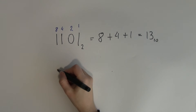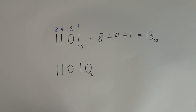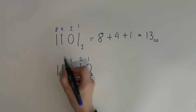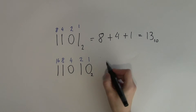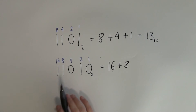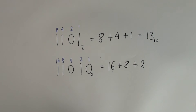Another example: 11010 in binary. I'll note it with a subscript 2. Again, look at the place values — the smallest is 1, and I just double up to get all the place values: 1, 2, 4, 8, 16. I only pick out the place values which have a 1 under them. So 16 plus 8 — the 4 has a 0 under it so it's not used — plus 2, because that has a 1 under it. The 1 place value is also not used.